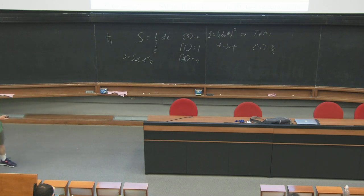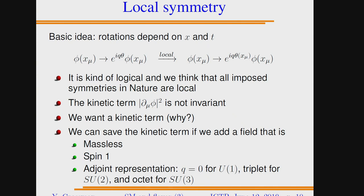If I have a Lagrangian invariant under a global symmetry, any term depending only on fields doesn't care whether θ is global or local — it's invariant regardless of θ. However, the kinetic term with its derivative does depend on the locality: taking the derivative of a field and then of θ gives an extra term. So the kinetic term is not invariant under the local rotation. According to the rules, if it's not invariant under the symmetry, we shouldn't write it — we should drop it.